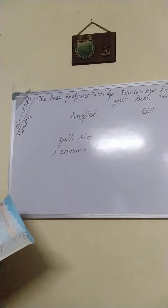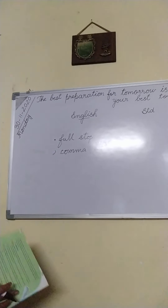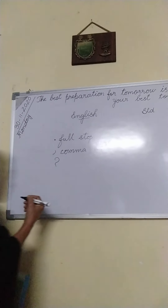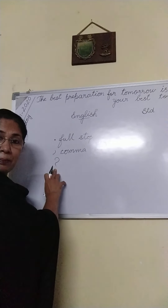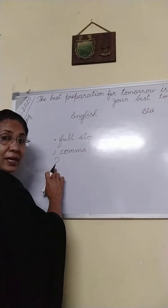The third one is question mark. This is a question mark. When it is an interrogation sentence, at the end of the sentence, you use this sign. This is known as question mark. What is an interrogation sentence? Asking something. What is your name? Where are you going? How old are you? Who is your father? What did you do today? Why are you late? All this is an interrogation sentence. So at the end of the sentence, you use the question mark.